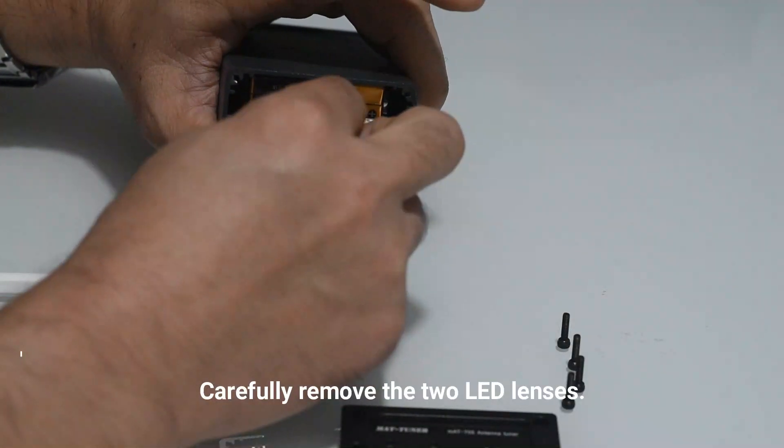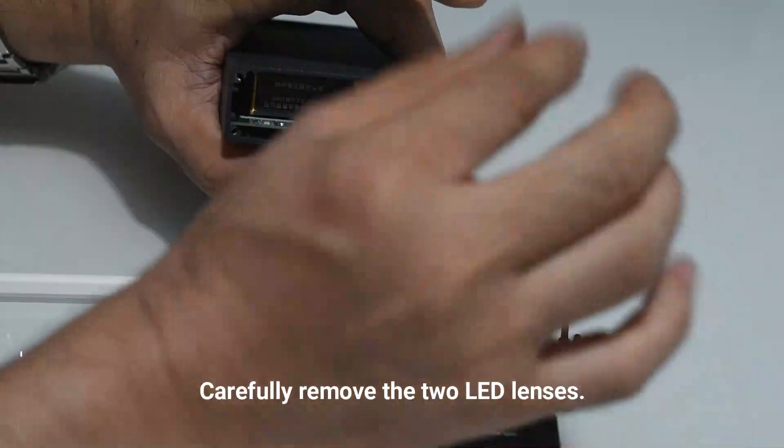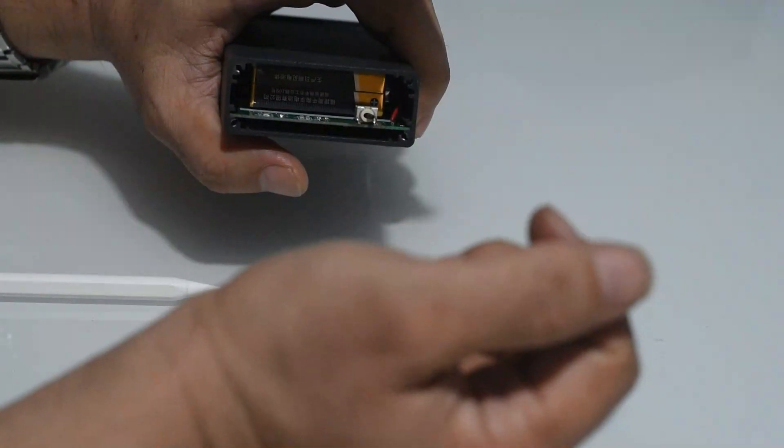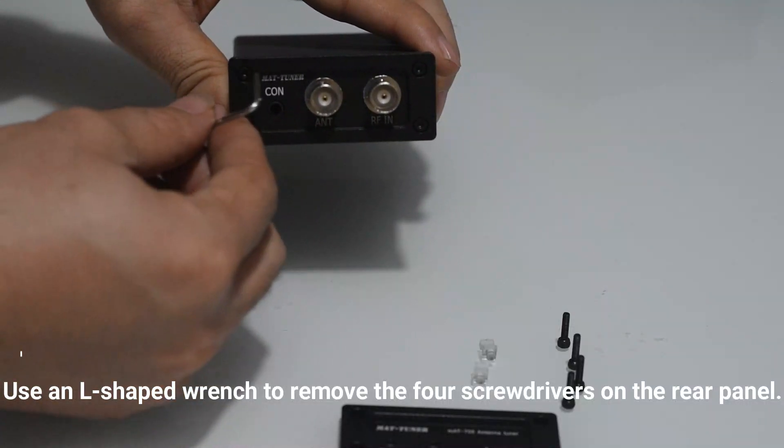Then remove the two LED lenses and put them somewhere safe. Turn the unit around and remove the four screws from the rear panel.